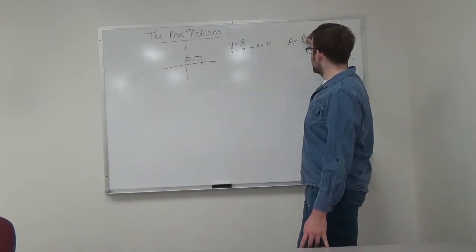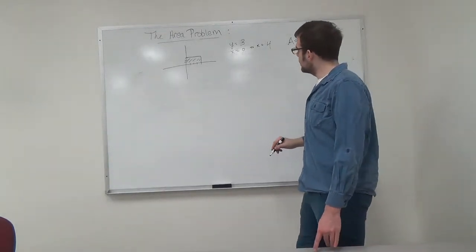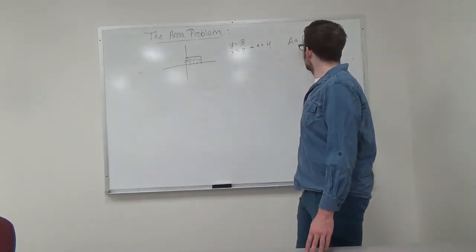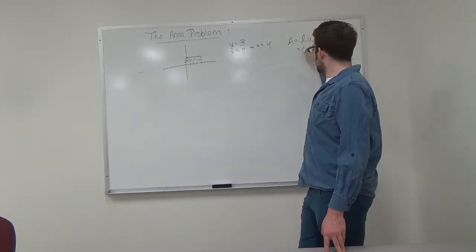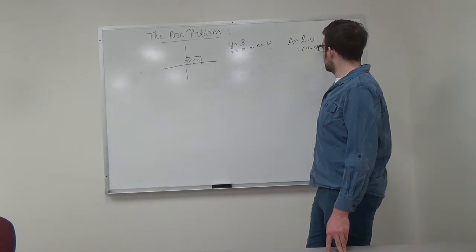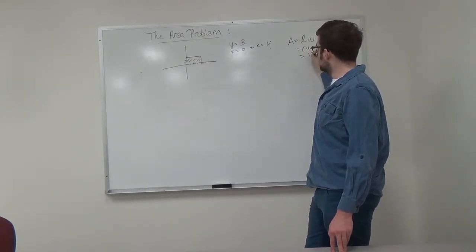If we remember from geometry, area is equal to length times width. Let's write out these expressions. Length is going to be 4 minus 0 and width is going to be 3. 4 times 3 is 12.